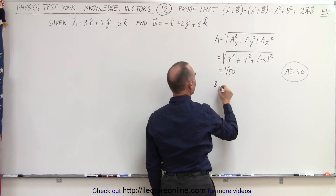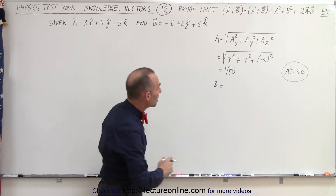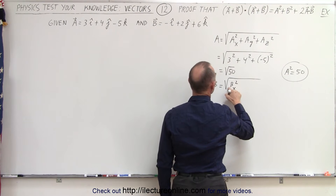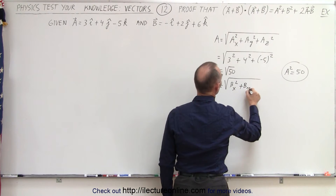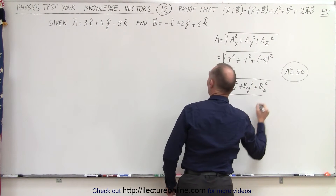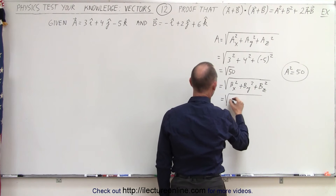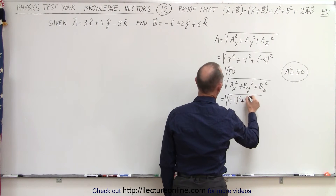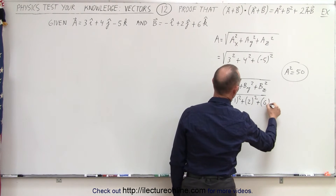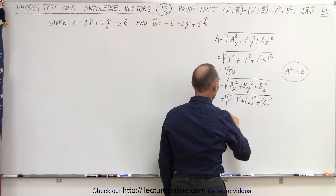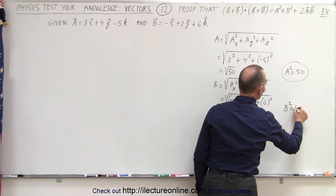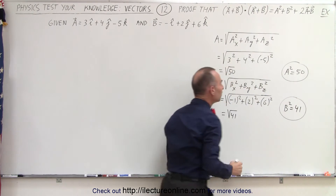Now we do the same for B. The magnitude of vector B is equal to the square root of the X component squared plus the Y component squared plus the Z component squared. In this case, the X component is negative 1, so negative 1 squared, plus the Y component 2 squared, plus the Z component 6 squared. That gives 1 plus 4 plus 36, which equals the square root of 41. So B squared is equal to 41.